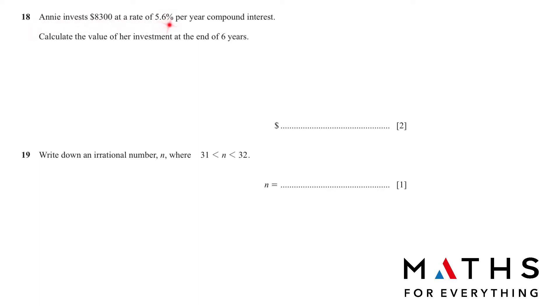Annie invests $8,300 at a rate of 5.6% per year compound interest. Calculate the value of her investment at the end of 6 years. Compound interest and simple interest are common questions. You need to just know the formula. This is the formula we need: P(1 + R/100)^n.